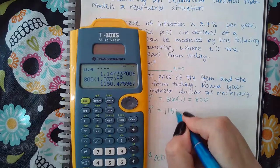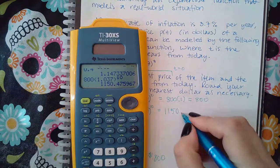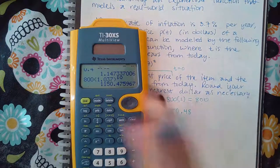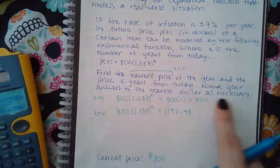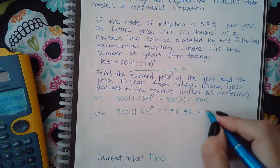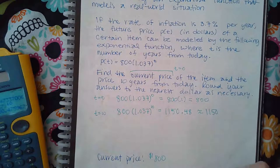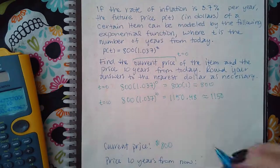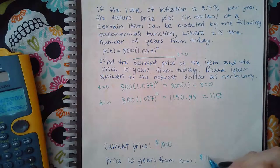So 800 times 1.037 raised to the power 10. This is money we're talking about, so it's going to be $1150.48. But it does say round to the nearest dollar, so this is a four, so it's just $1150. So then the price 10 years from now is going to be $1150.